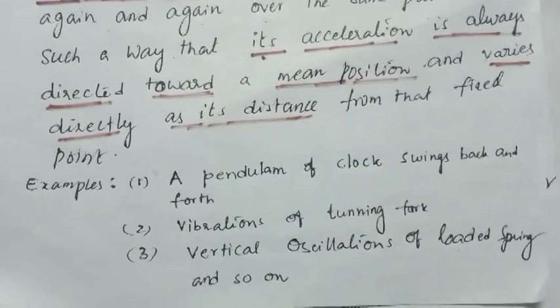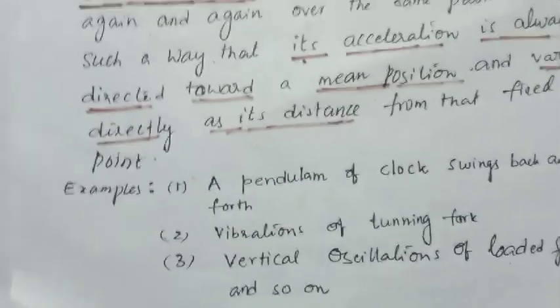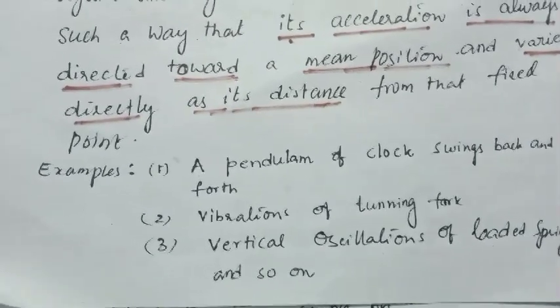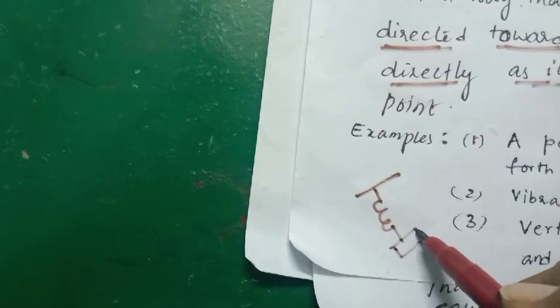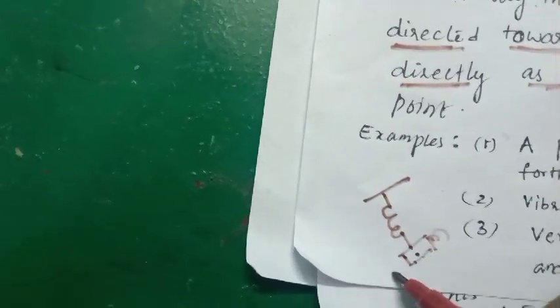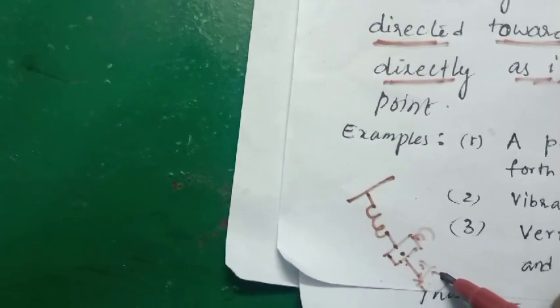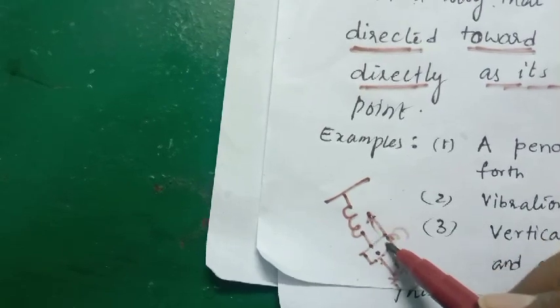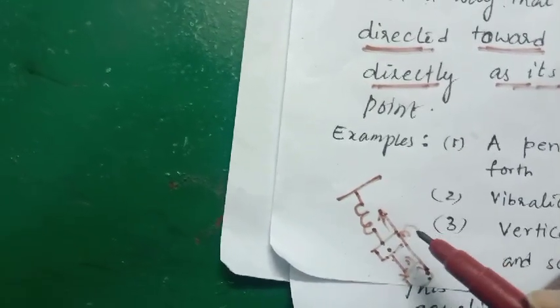When we excite the tuning fork, the prongs oscillate to and fro about the mean position. The next example is the vertical oscillation of a loaded spring. When we attach a load of mass m to a spring and displace the mass through a distance x, then release it, the mass moves towards the mean position, overshoots, takes a new position, and again comes back to the mean position, continuing this oscillation — this is nothing but simple harmonic motion.